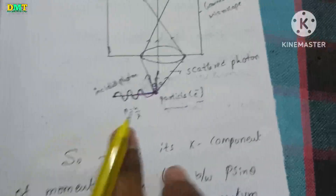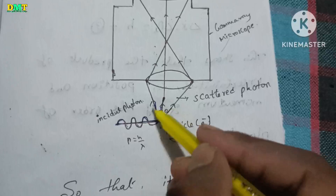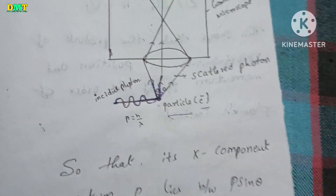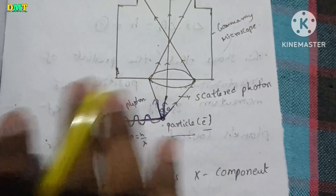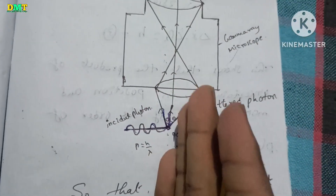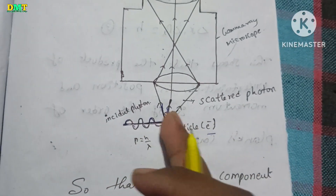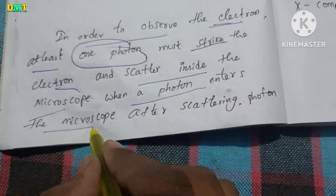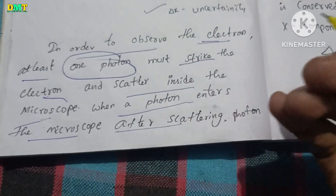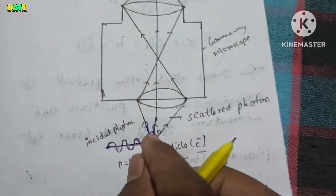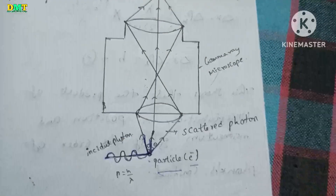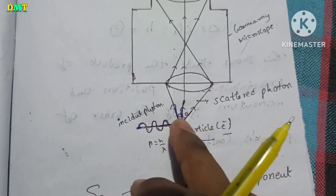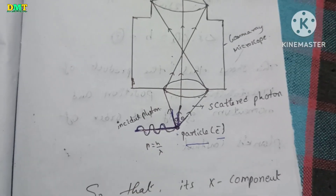The photon scatters and enters inside the microscope. It is scattered in different directions. When the photon enters the microscope after scattering, photon makes an angle theta anywhere in the microscope. So in the middle of the microscope it is scattered through an angle of theta plus theta — that is 2 theta.